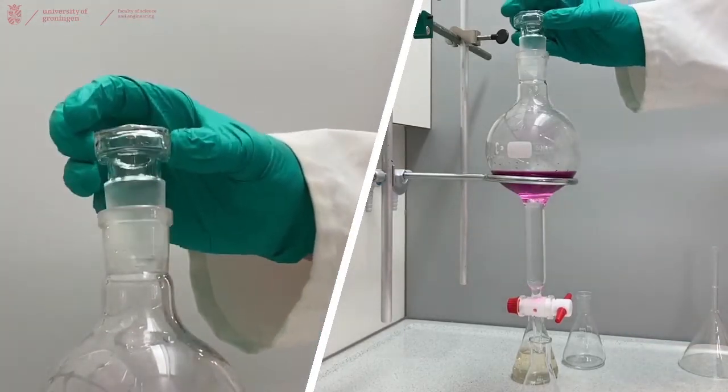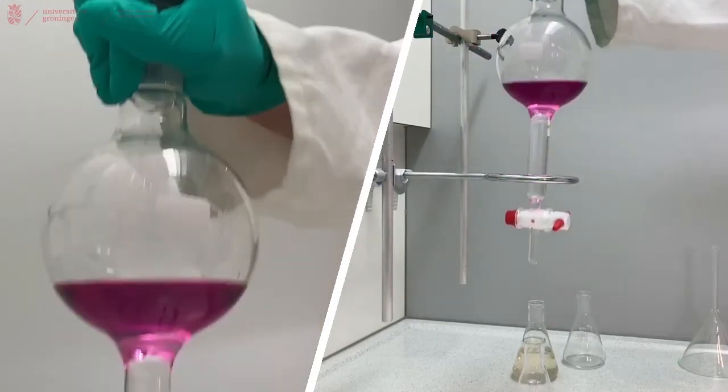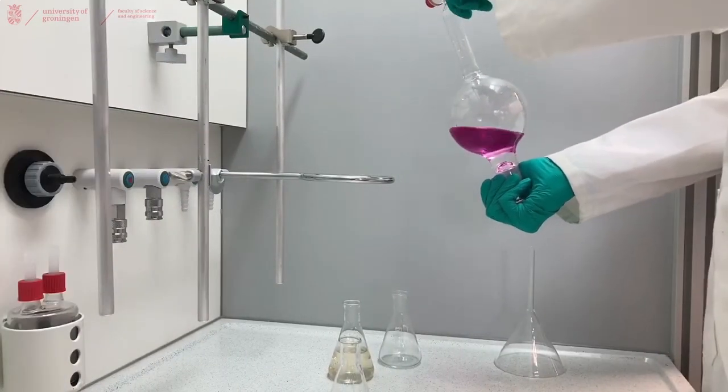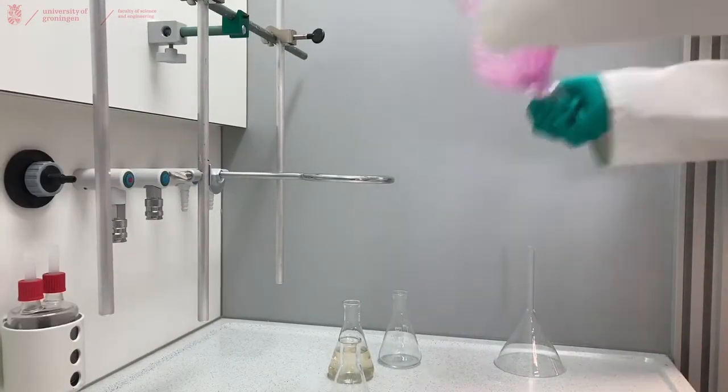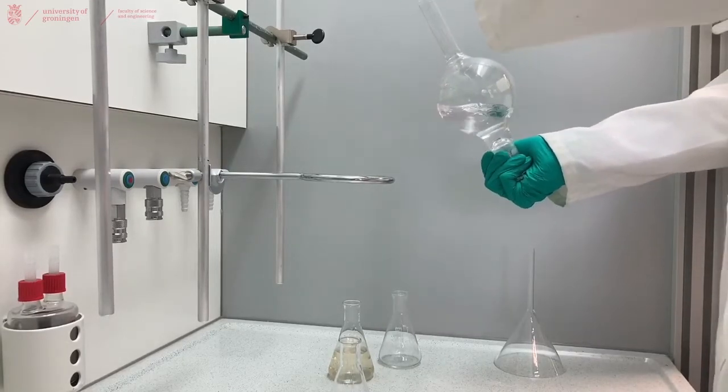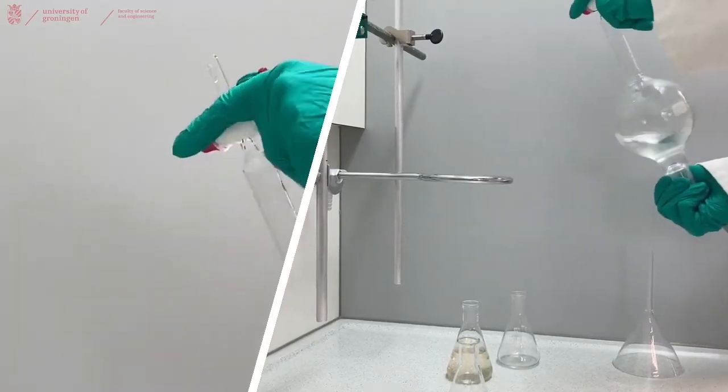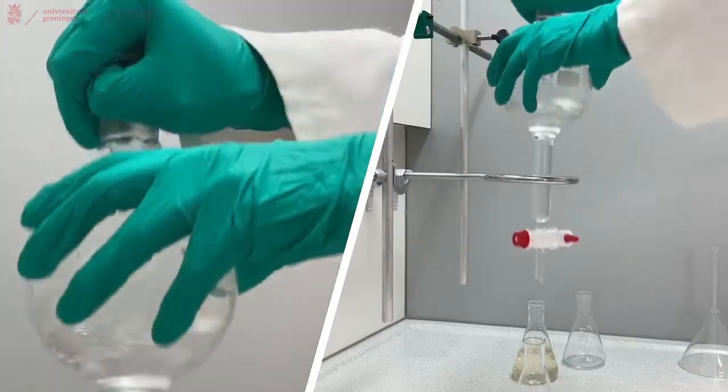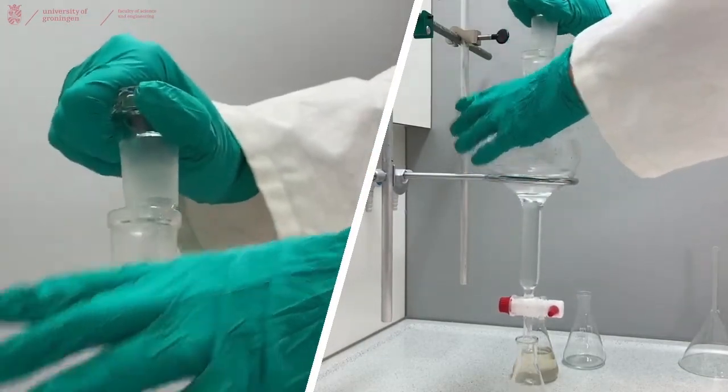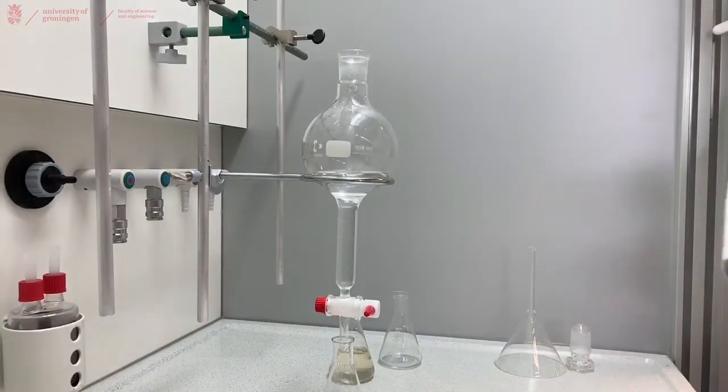Place the stopper back on your separation funnel, place your hand on top of the stopper and hold it tight. Now we will repeat our shaking motion and frequent opening of the vent to release pressure. After placing the separator funnel back into our holder, we can clearly see that the pink color is gone.